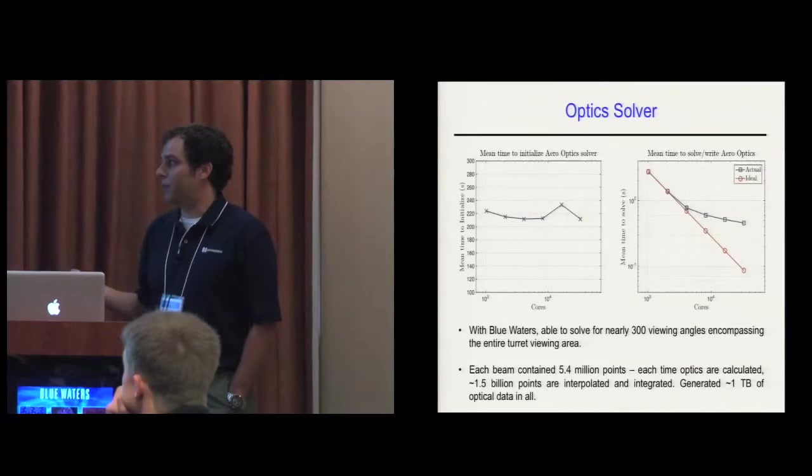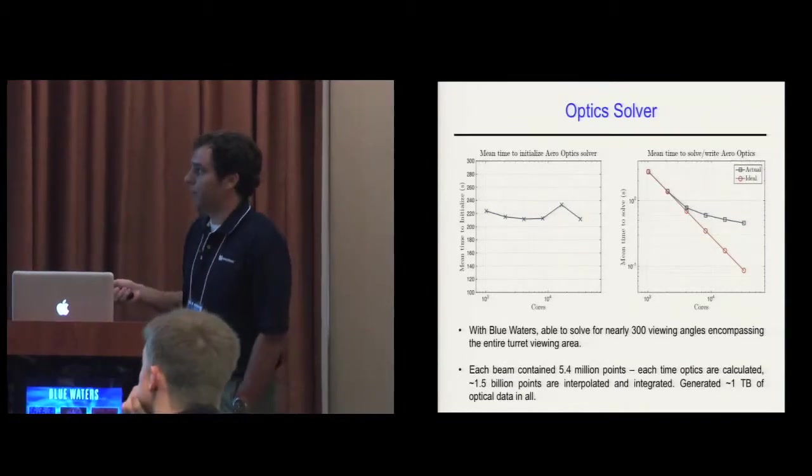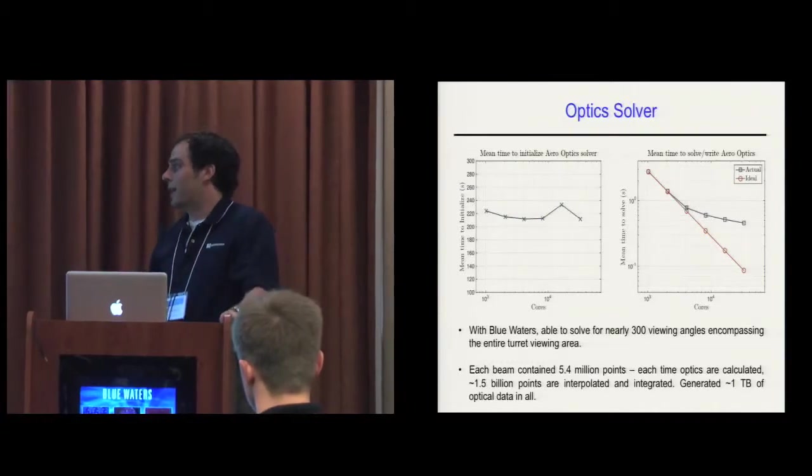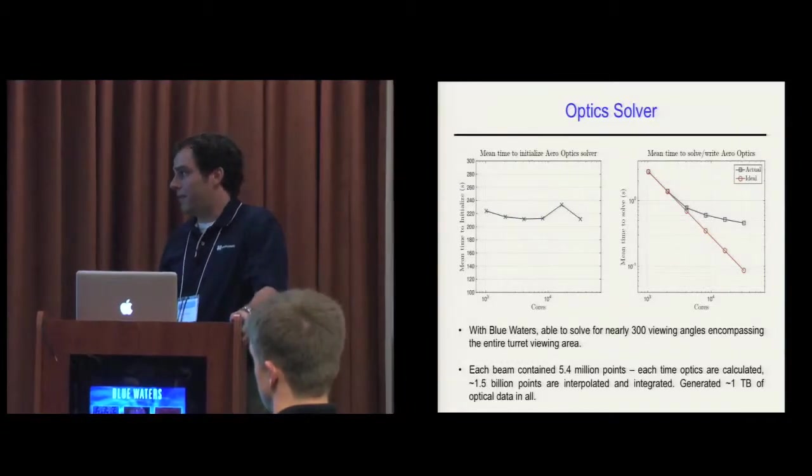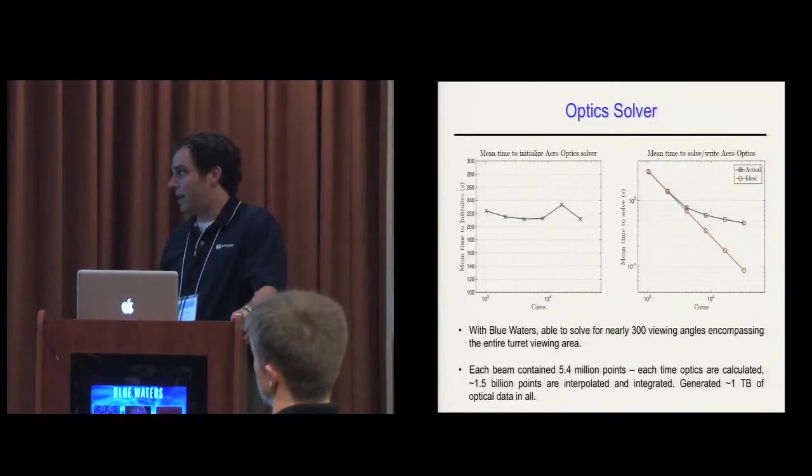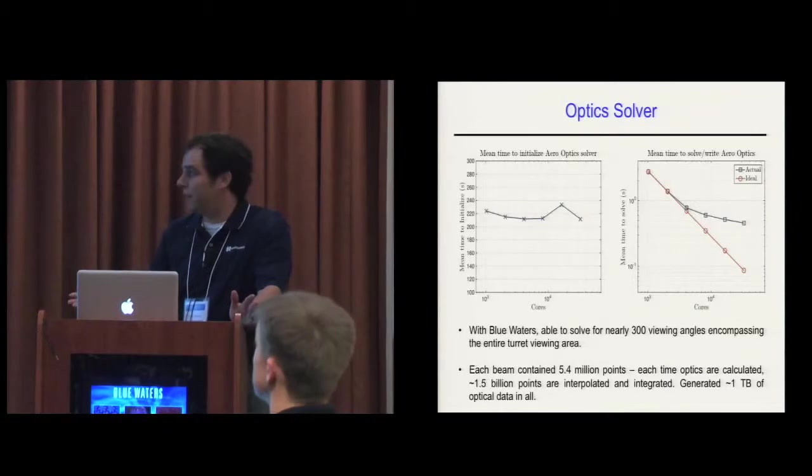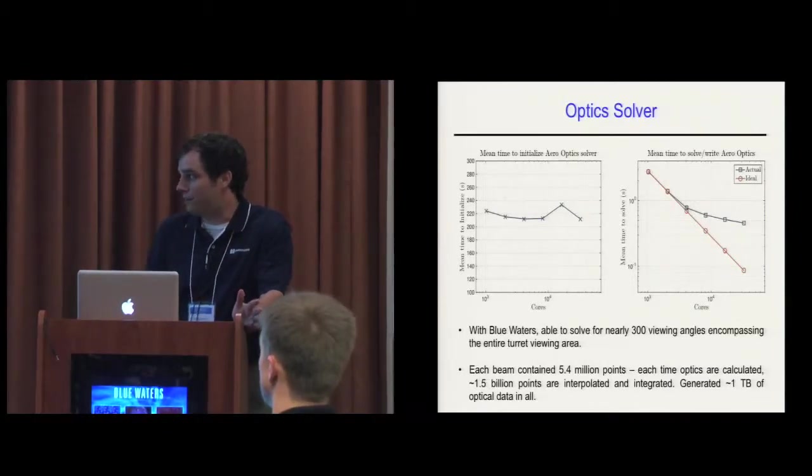With Blue Waters, the machine has a lot of memory, and we're able to solve for nearly 300 viewing angles that cover the entire viewing area. Each beam contains about 5.5 million points. In each time the optics are calculated, over 1.5 billion points are interpolated and integrated. In all, with all these different angles, we generated around a terabyte of optical data.